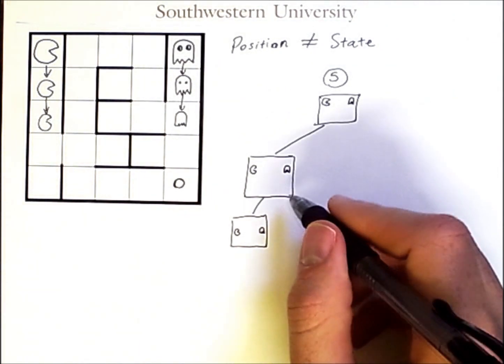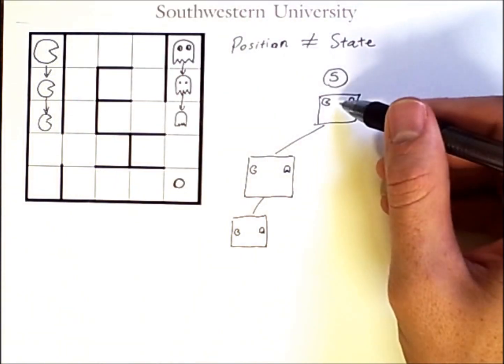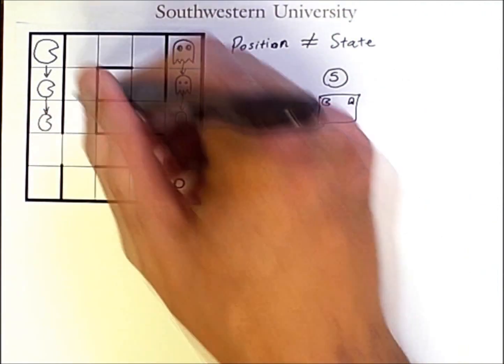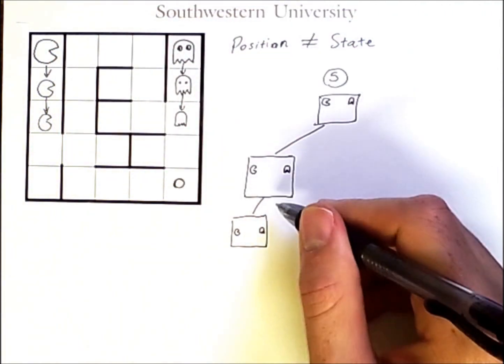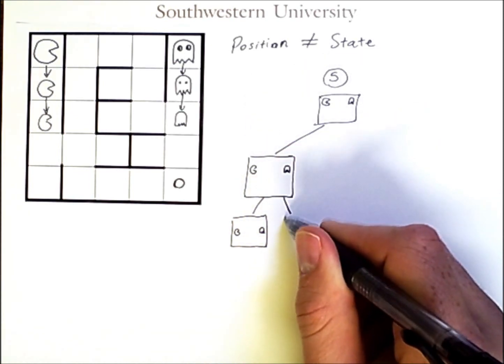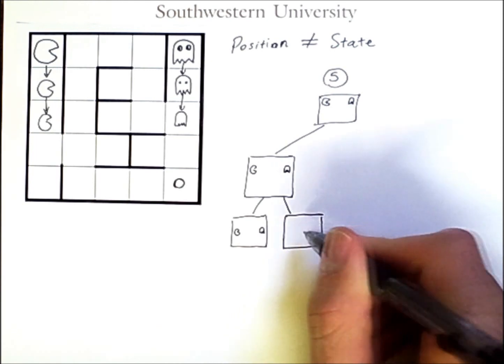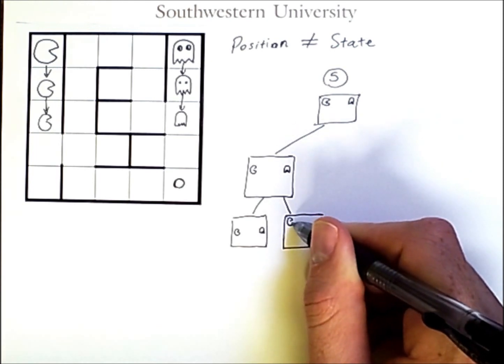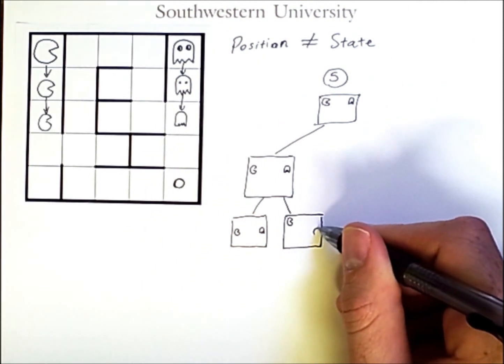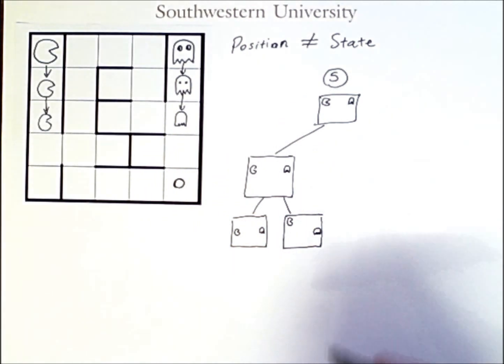In fact, from here, Pac-Man moved down one. We reached this position. But, if from here, Pac-Man had moved back up, another state that could have been reached from here would have Pac-Man back in the upper corner. But, the ghost would still be in this area, pursuing it.